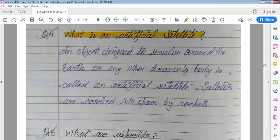What is artificial satellite? An object designed to revolve around the earth or any other heavenly body is called an artificial satellite. Satellites are carried into space by rockets.